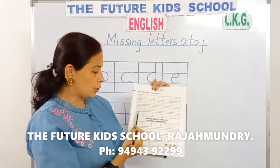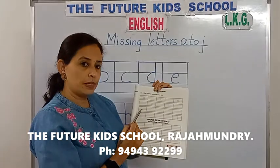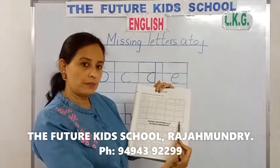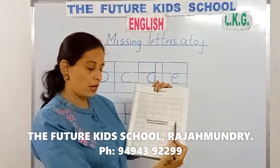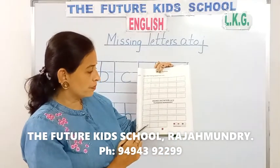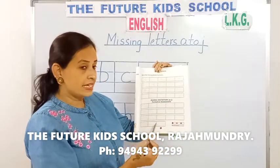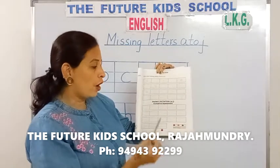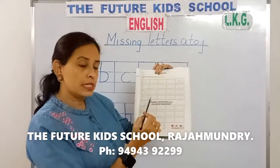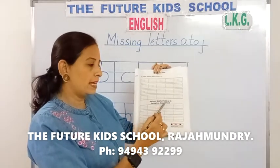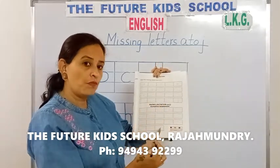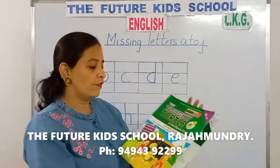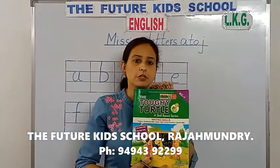Do this for homework children. And also write your alphabets, your small letters from A to J. Do this for homework. And look below children, you have dictation over here. So practice dictation from A to J. Small letters from A to J. So this is your homework for today from page number 41 from the writing skills book.